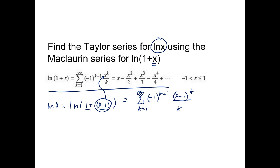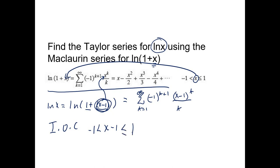The interval of convergence for the ln(x) series: the substituted expression (x-1) must satisfy -1 < (x-1) ≤ 1. Adding 1 to all parts gives 0 < x ≤ 2. So the interval of convergence for this Taylor series is (0, 2].